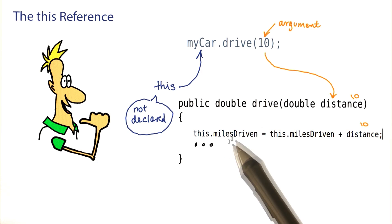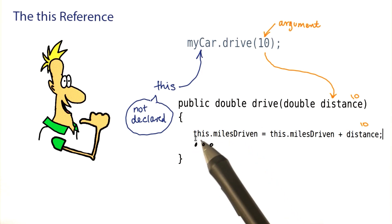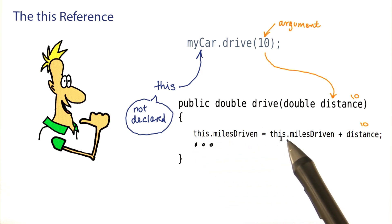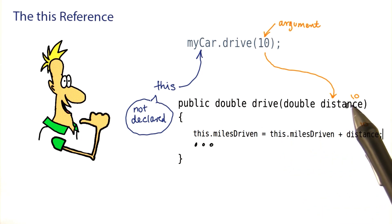So now it becomes very clear that it's the miles driven of this car that are set to the miles driven of this car, plus the distance, and the distance was a parameter variable.